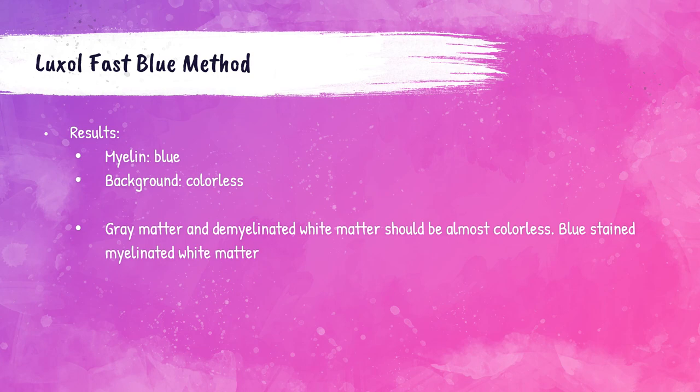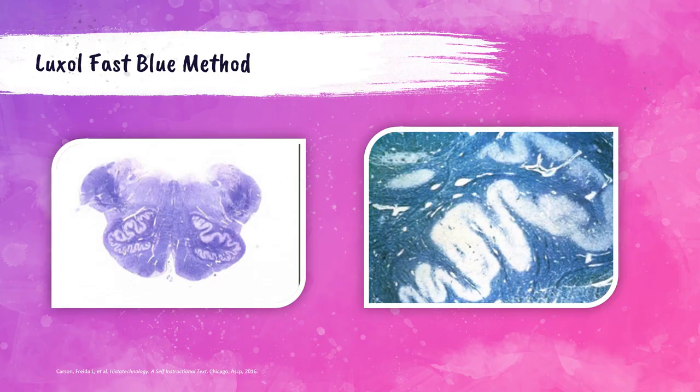When stained with Luxol Fast Blue, myelin will be blue and the background colorless. Myelin should contrast sharply with the colorless gray matter and demyelinated white matter. Photos show a medulla cross-section with sharp gray/white matter differentiation (white = gray matter, blue = white matter/myelin) and an olivary nucleus section where the colorless area is gray matter and the blue color is the white matter/myelin.